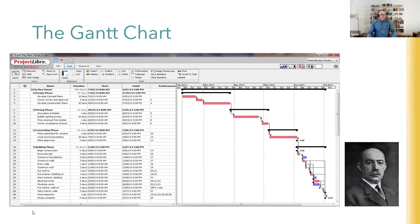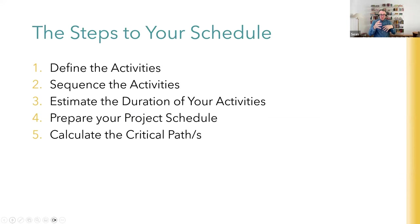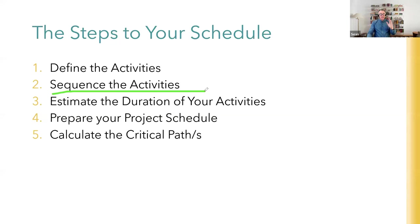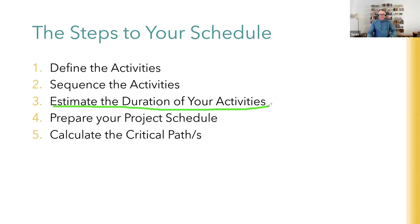To build the schedule, we've got several steps. First, we're going to define our activities by taking information from our project scope statement and work breakdown structure and decomposing it further down to activity level. Once we've defined the activities we have an activity list, then we're going to sequence them - putting them in order, defining predecessor and successor relationships - and we're also going to estimate the duration of each activity using the estimating techniques covered in the estimating modules.